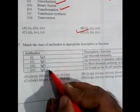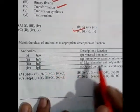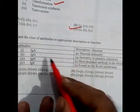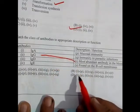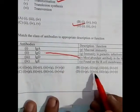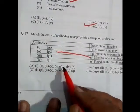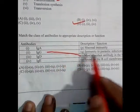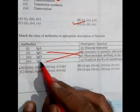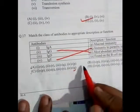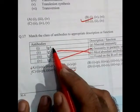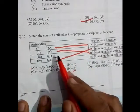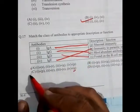Question 17: Match immunoglobulins with their functions. IgG is the most abundant antibody in the blood. IgA is associated with mucosal immunity. IgE is associated with hypersensitivity and parasitic infections. Matching these correctly gives the answer as option C.